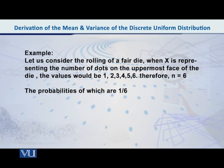Let's see through an example whether its mean is really equal to n plus 1 over 2. So let's consider the rolling of a fair die. If we roll a fair die, what will be the values of x when x is representing the number of dots on the uppermost face of the die? Of course, the values will be 1,